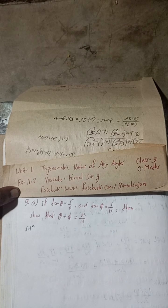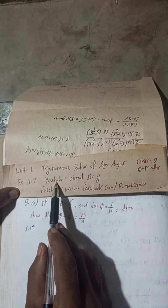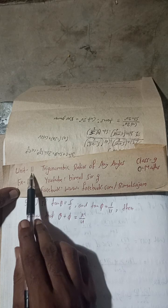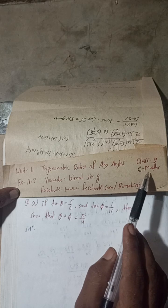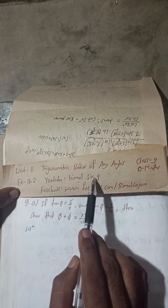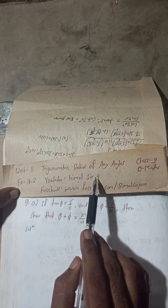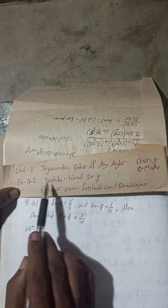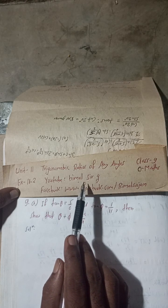Radhe Radhe, Jaya Shri Krishna. Class 9 and 10 students, welcome back to Bimal Sarji YouTube channel. This is question number 9a of Exercise 11.2, Unit 11 — Trigonometric Ratios of Any Angles chapter, Class 9 Optional Maths. If you check the playlist of Bimal Sarji YouTube channel, you will get most of your Class 9 and 10 books — optional as well as compulsory solutions, and also science reasoning parts.